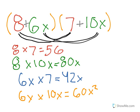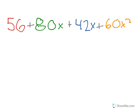Next, you'd add all of these numbers together. So that would be 56 plus 80x plus 42x plus 60x squared.